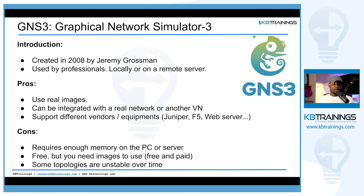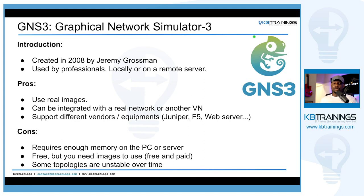Not all vendors have the same conditions — some put their images out for free, some require a contract. Images are available on the internet. The cons: even though GNS3 is free, you still need those images, some of which are paid, like the VIRL images. GNS3 also requires enough memory on your PC or server because those images are real — they need real RAM and storage. Your PC needs to be powerful. At least 8GB of RAM is recommended.